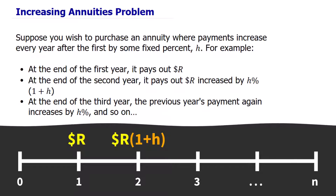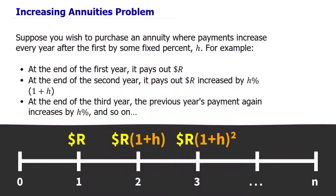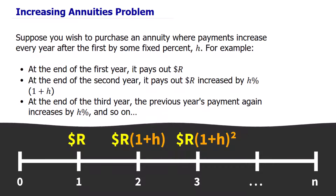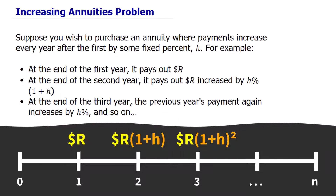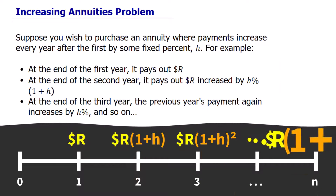At the end of the third year, the previous year's payment again increases by H percent. Since 1 plus H is being multiplied again, we can simply write it as a power with the exponent 2, and so on.